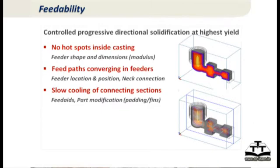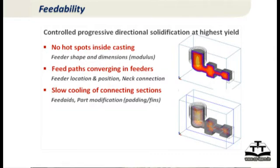The first rule was no hotspot in the casting. How do I take care of that? I take care of that by doing the right feeder shape and right feeder size, so I have a hotspot in the feeder now. Instead of a hotspot in the casting, if I make a feeder large enough, I have a hotspot in the feeder. That is not guaranteed enough. I have to go to rule number two, which says that the feed metal should be able to flow from the feeder to the hotspot in the casting, which means the feed path should be good.